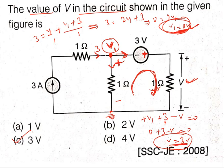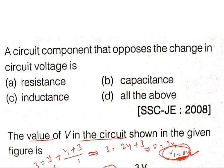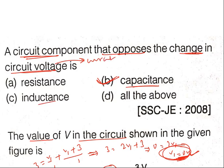For the second question: a circuit component that opposes the change in voltage — the answer is capacitance. Capacitance opposes the change in circuit voltage. If the question asks about opposition to change in current, then the answer is inductance. To summarize: if the question says voltage, choose capacitance; if the question says current, choose inductance.